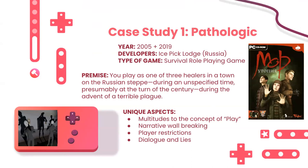There are actually two separate games: Pathologic 1, which came out in 2005, and Pathologic 2, which came out in 2019 — kind of a reboot but also a sequel. The premise is that you play as one of three healers in a Russian town set around the turn of the 20th century, during the advent of a terrible plague.